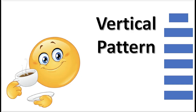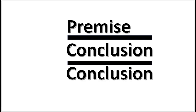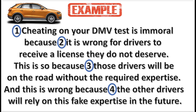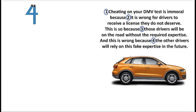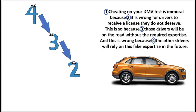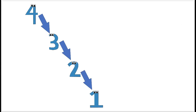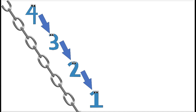The next diagram is called the vertical pattern. The vertical pattern is used when a premise implies a conclusion which in turn implies another conclusion. The diagram will show that statement 4 supports statement 3, which supports statement 2, which supports statement 1. This pattern shows a chain of arguments.